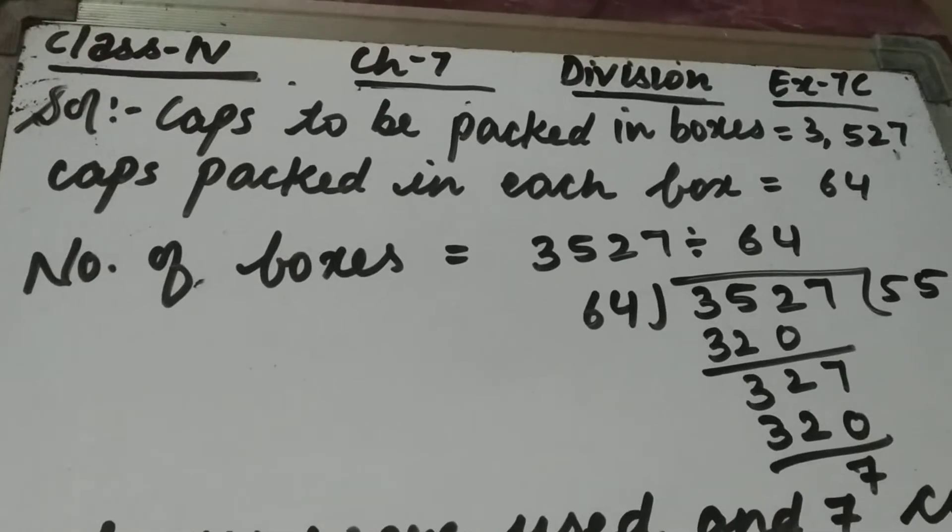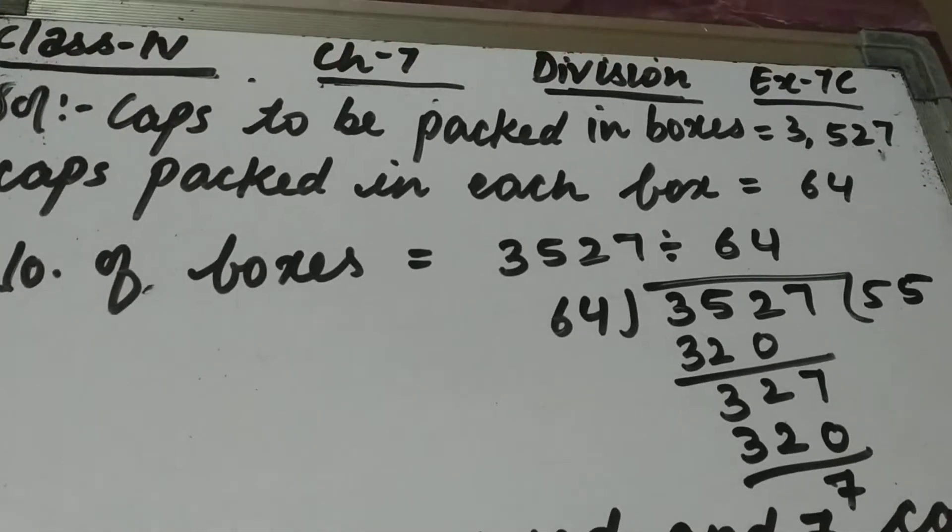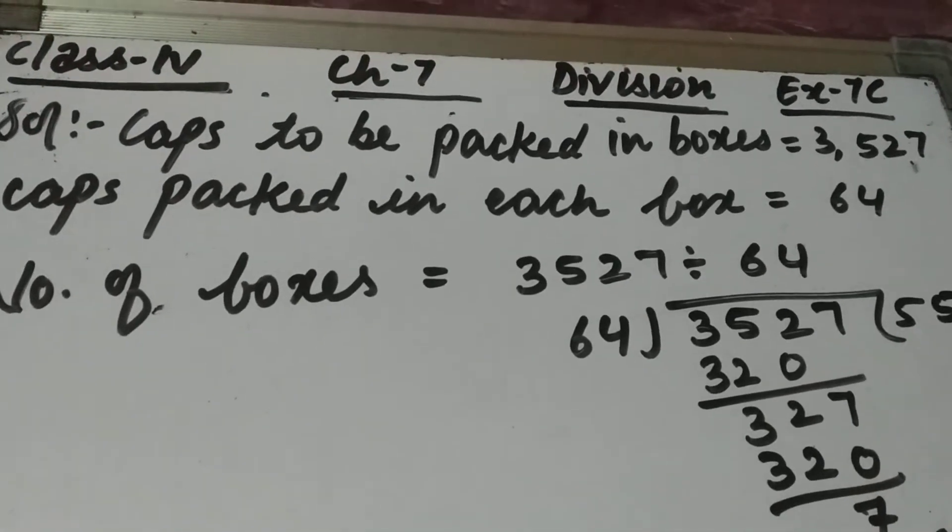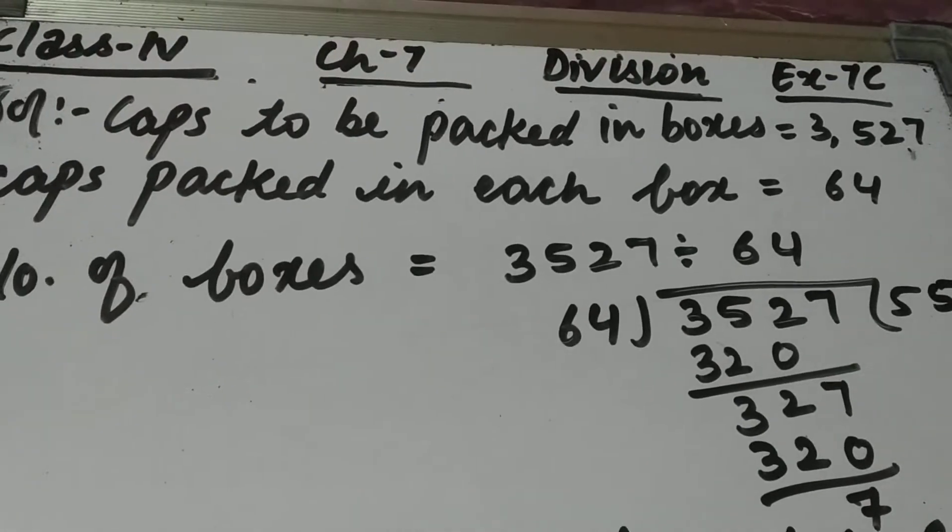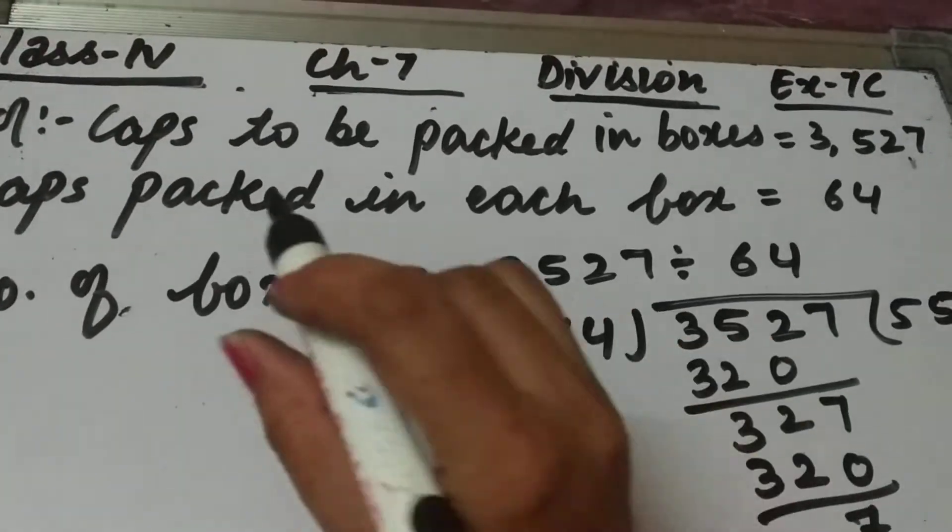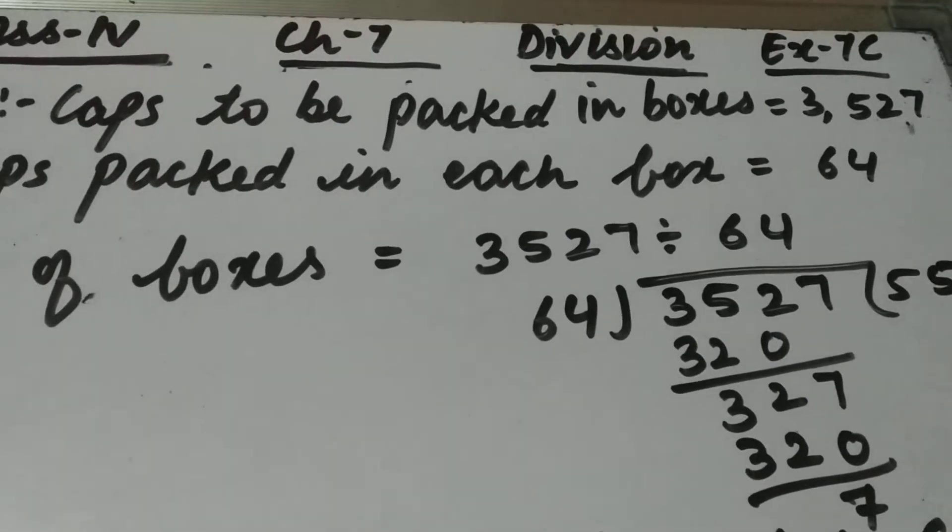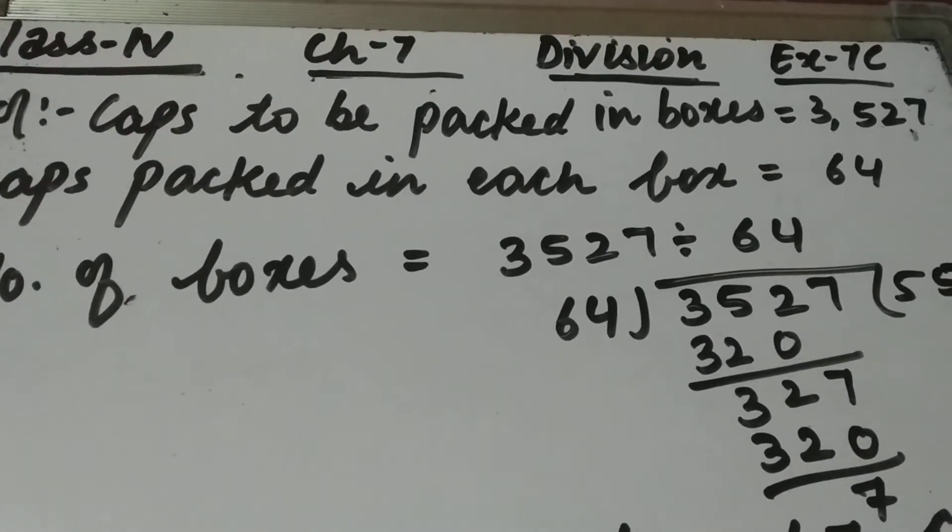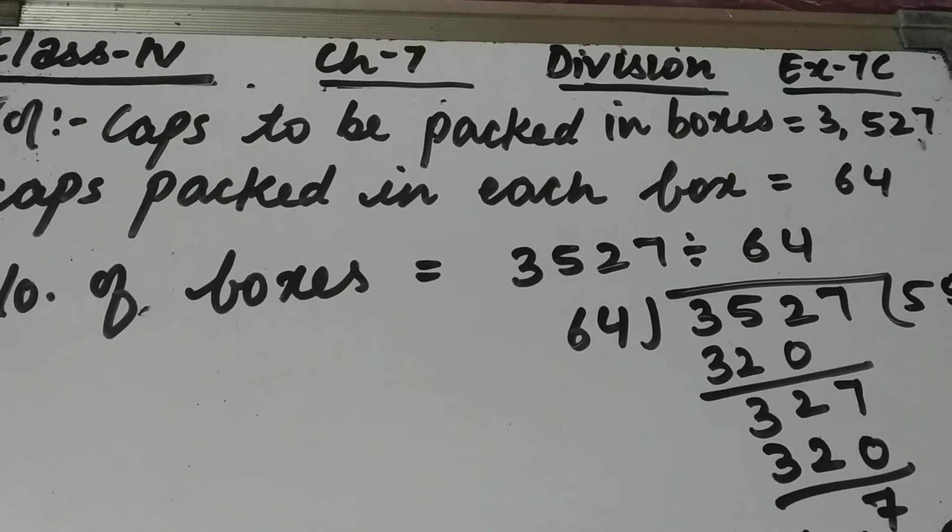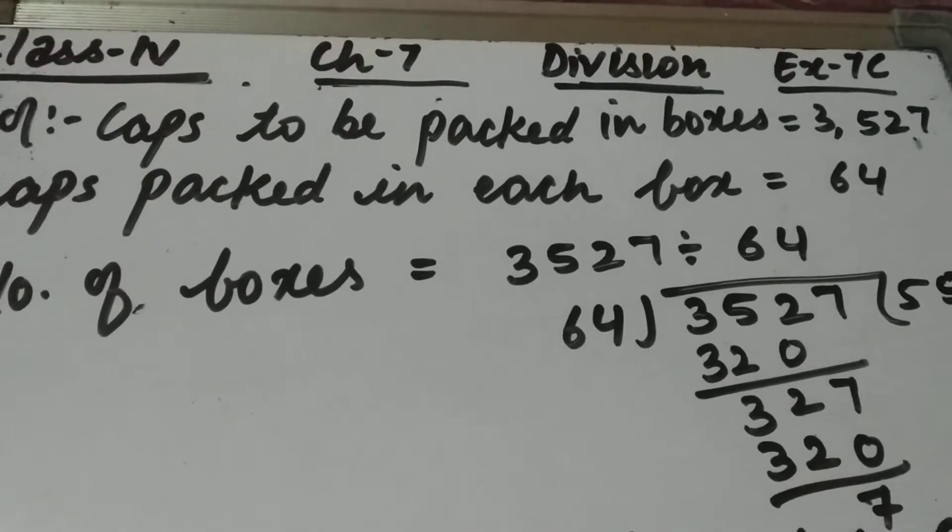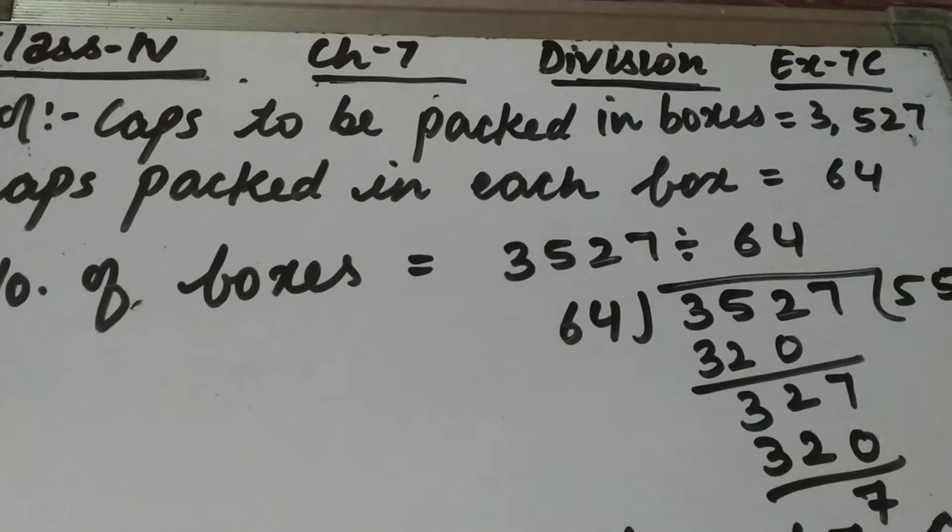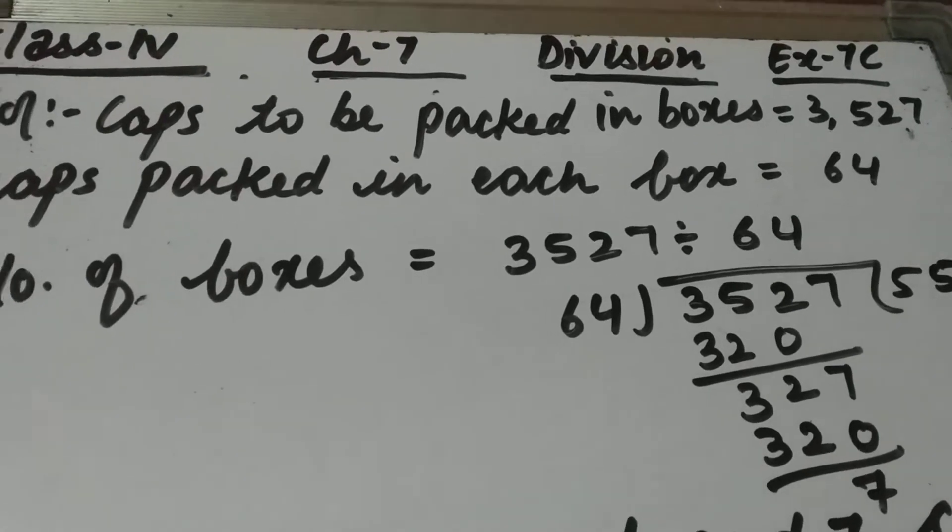So the caps to be packed in the boxes - the total number of caps were 3527 that were to be packed in boxes. So you will write: caps to be packed in boxes equals 3527. And in each box, how many caps were kept? 64. So you will write: caps packed in each box equals 64.